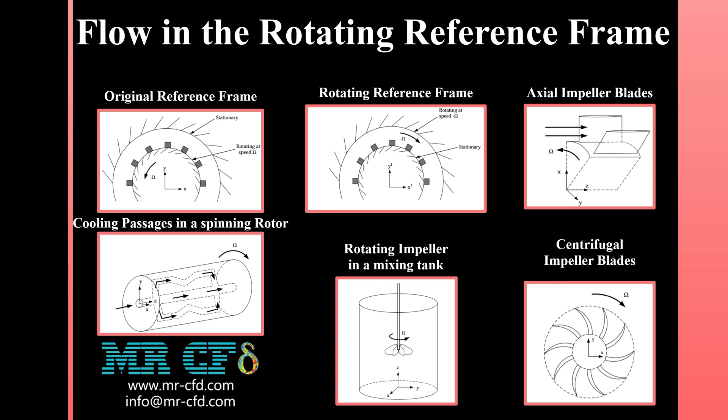Flows in rotating passages, such as cooling ducts, secondary airfoil circuits, and disc cavities in rotating equipment are also applicable. When such problems are defined in a rotating reference frame, the rotating boundaries become stationary relative to the rotating frame, since they are moving at the same speed as the reference frame.